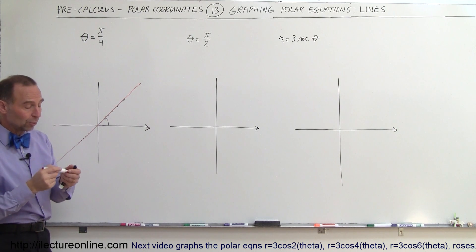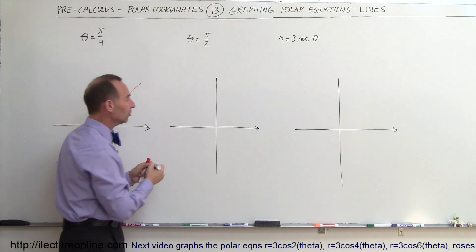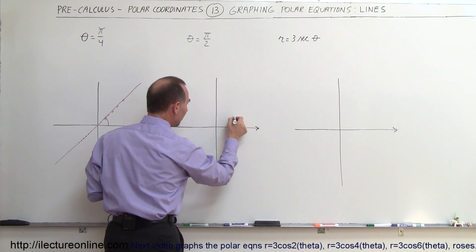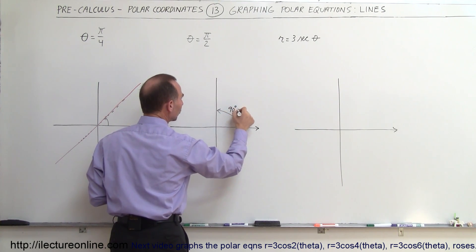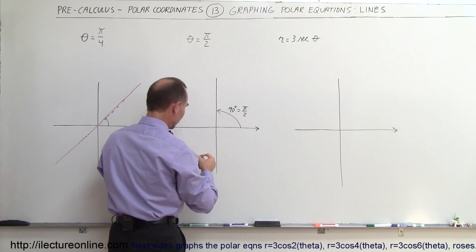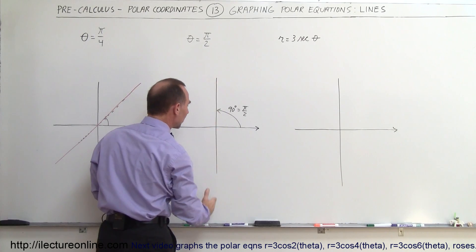Same for theta equals pi over 2. Again, we take a 90 degree angle. So we have an angle in reference to the positive x-axis of 90 degrees, which is equal to pi divided by 2, and therefore we have a line that goes straight up and down.